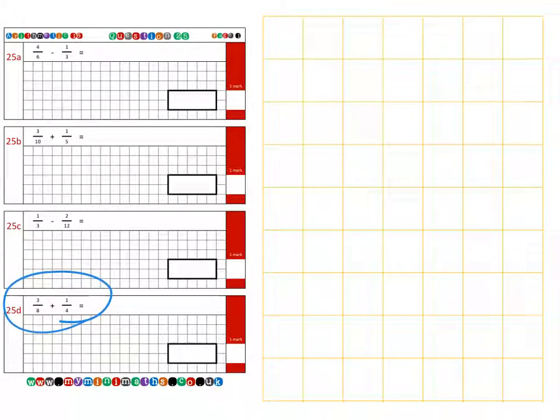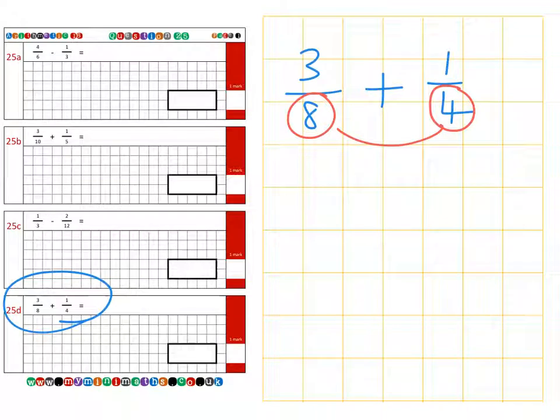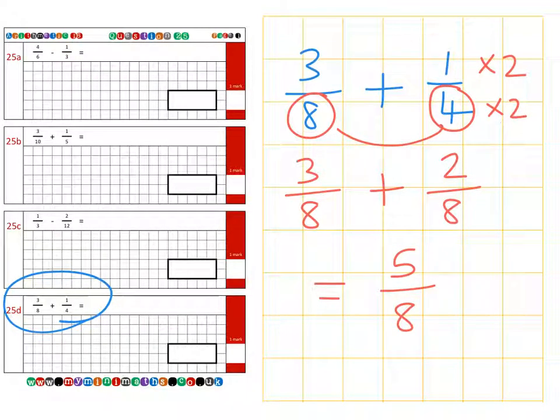And finally is question 25d which is three eighths and we're adding that to one quarter. As before we need to make sure our two denominators are equal, they are common to each other, so we're going to make them both into eight so I've multiplied this denominator by two so I need to make sure I multiply its numerator by exactly the same amount which is two so two goes at the top. This remains the same so we have three eighths plus two eighths giving us a total of five eighths.